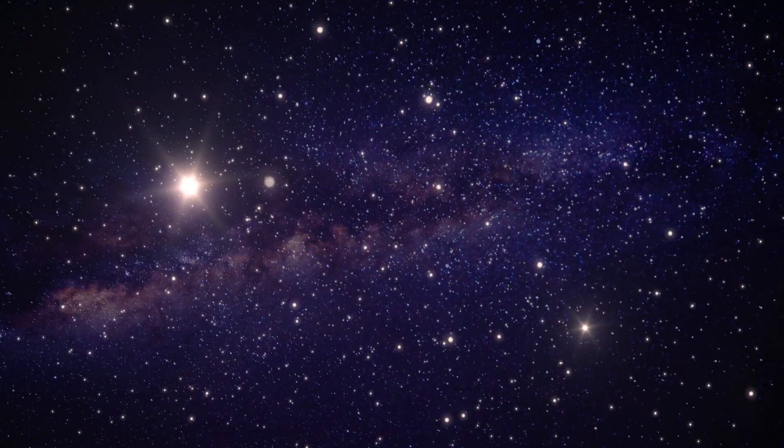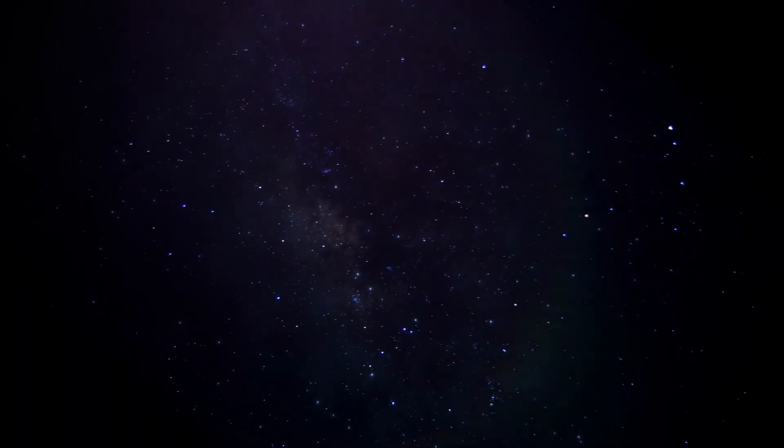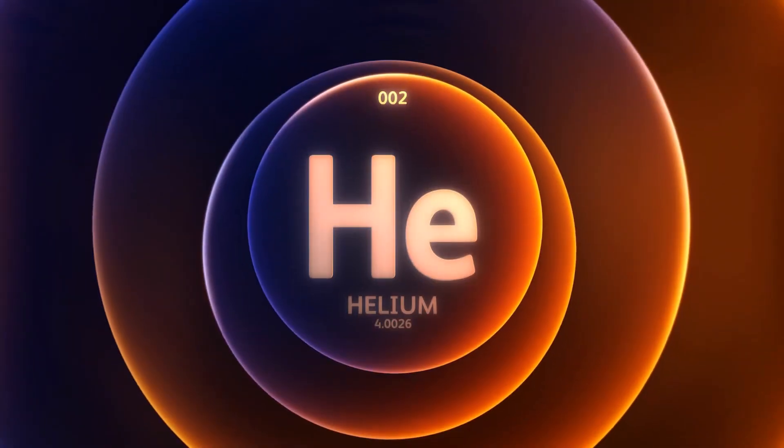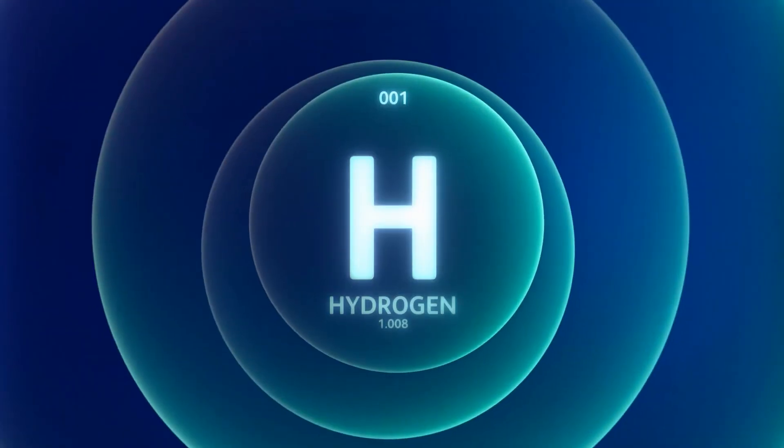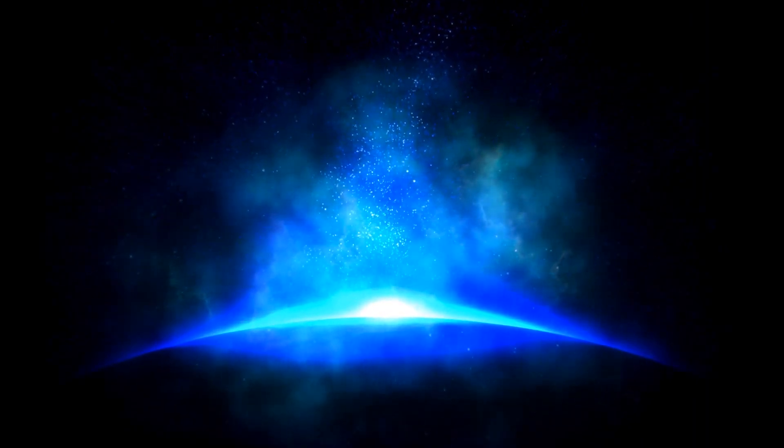According to scientific calculations, the universe cooled down sufficiently after 380,000 years to give rise to the first stable atoms of helium and hydrogen. The Dark Era came to an end when the universe gradually became luminous.